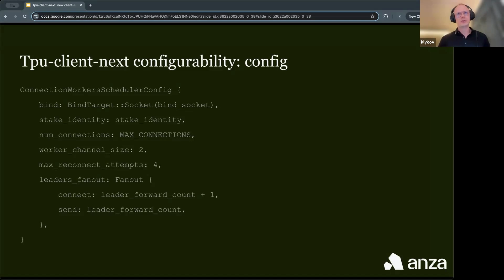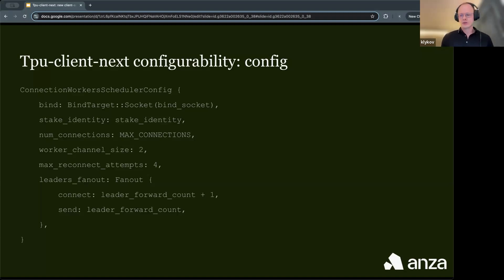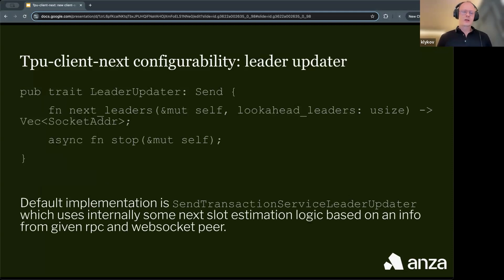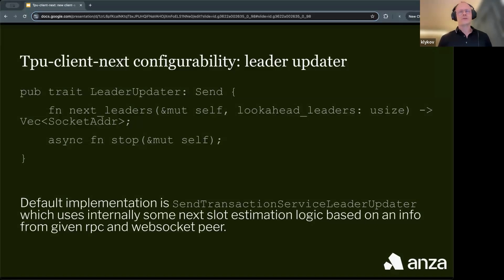The connect value should be a bit larger than send, so that we hide the latency of creating new connections. Users can also provide their own custom leader updater implementation, which is used inside TPU Client Next to find future leaders. The default implementation is the same as used in programs like Bench TPS, using RPC and WebSockets to get slot information. But inside the validator we have POH, so we have a custom implementation relying on it — and any other custom implementation is possible.